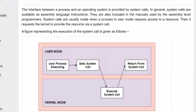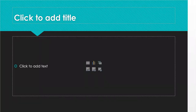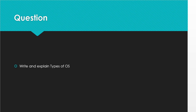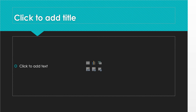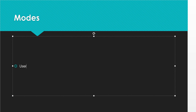Hello students, welcome back. In the last class we discussed about operating systems and types of different operating systems. Now we have to understand what system calls are — that is your topic for today's class. To understand system calls, you need to understand a little bit about different types of operating system modes. We have two different modes: one is called user mode and the other is known as kernel mode.